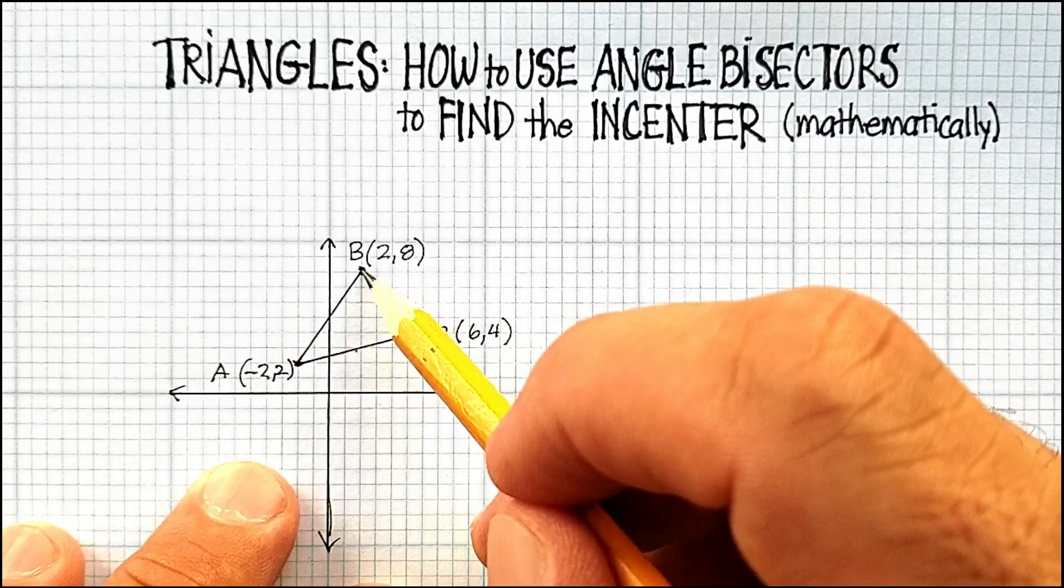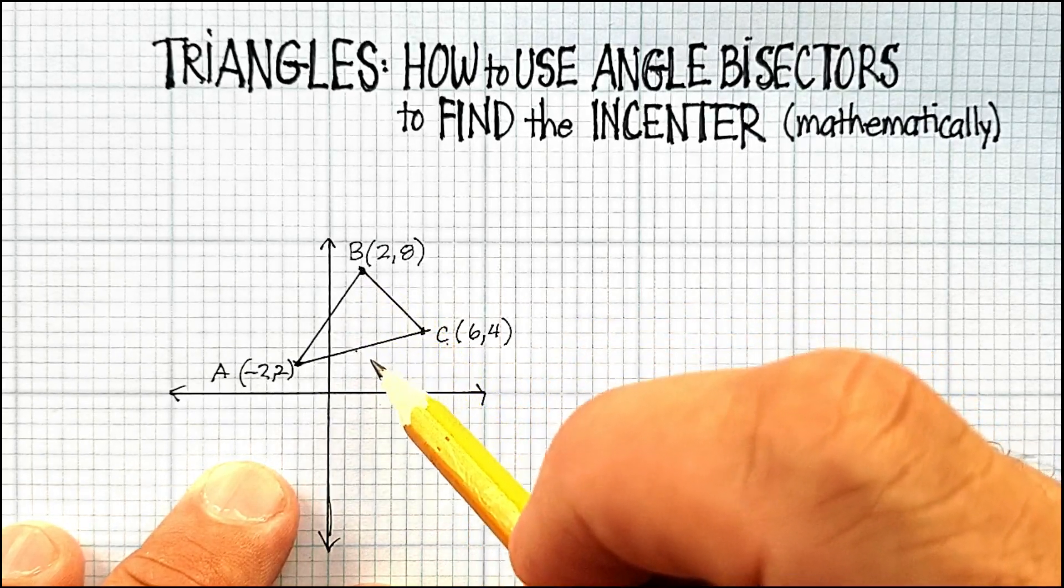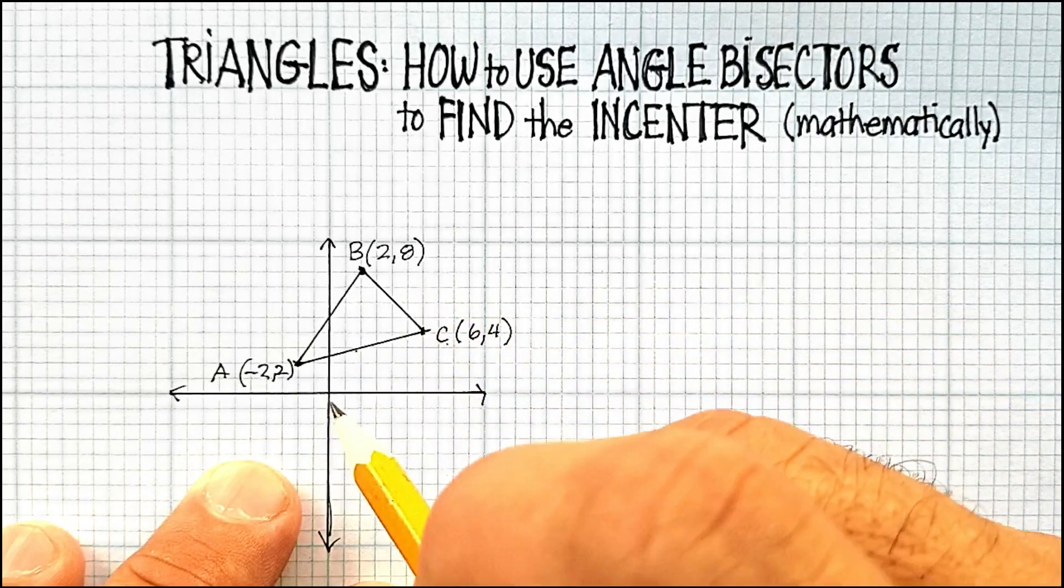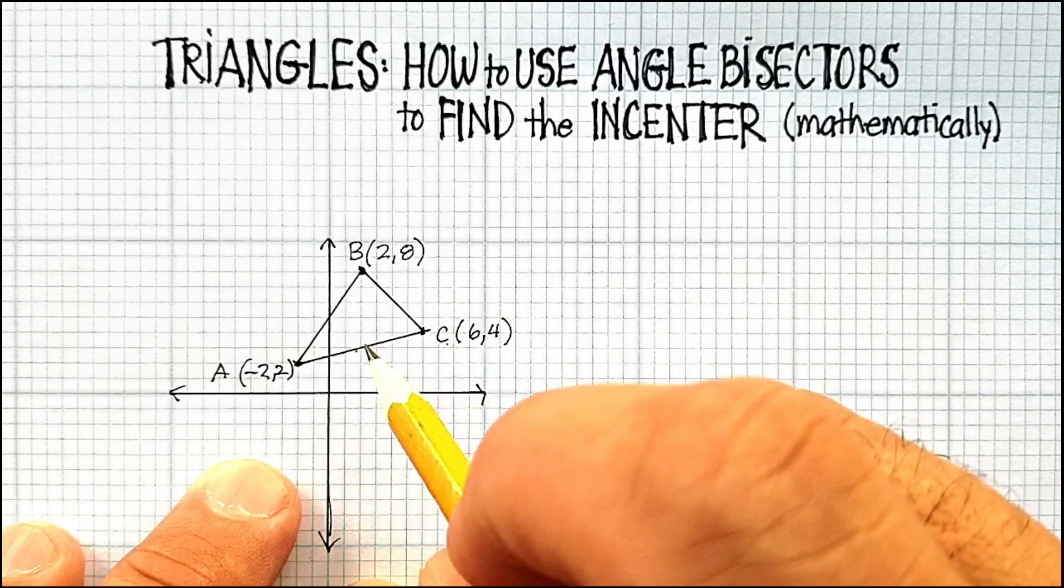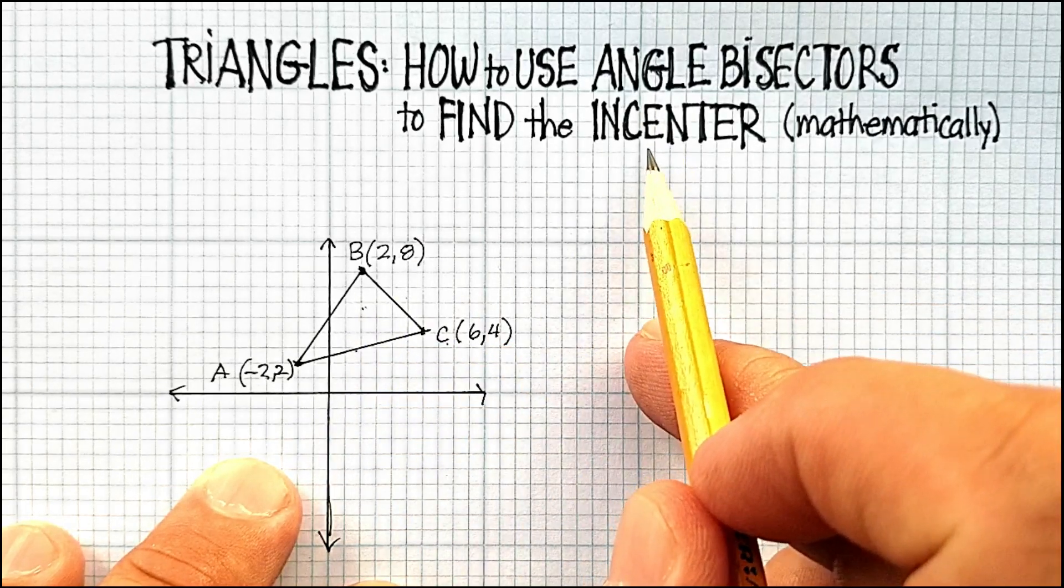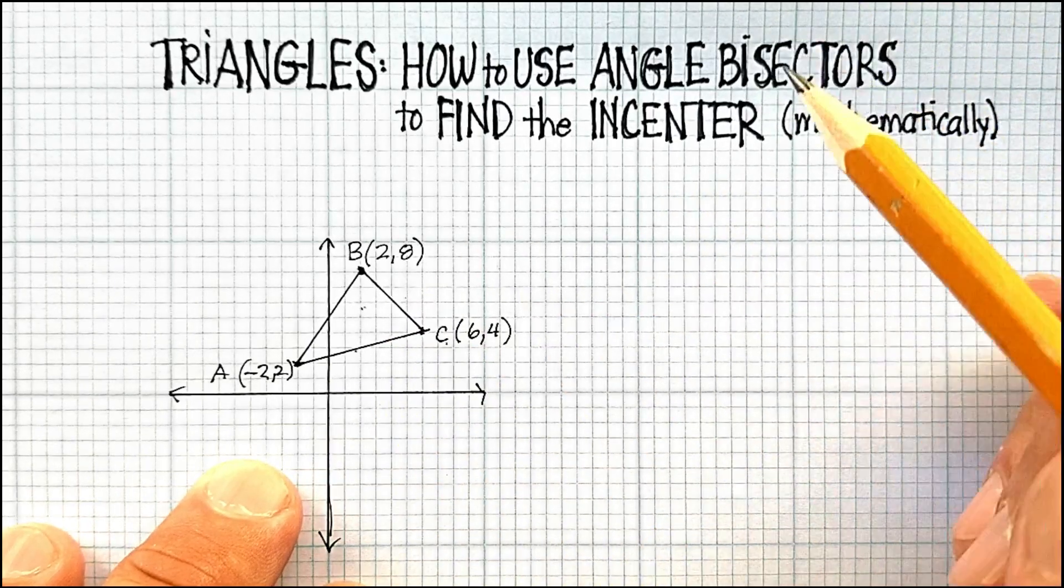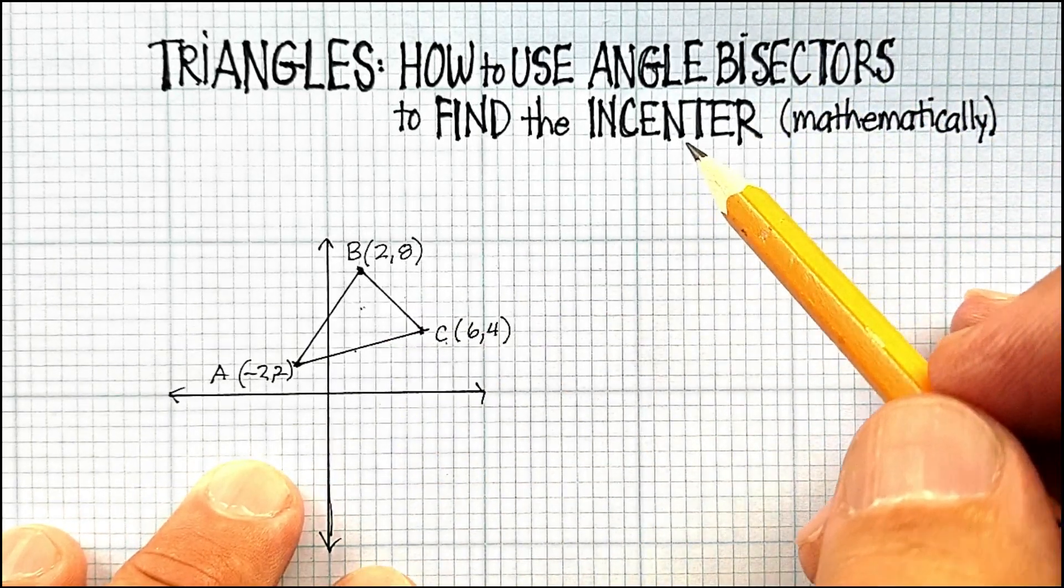Same with this vertex, find the number of degrees, cut it exactly in half and then draw a straight line. Basically those three lines will intersect right at one spot and that spot is called the incenter. Now we can do this, that's the concept of angle bisectors finding an incenter.